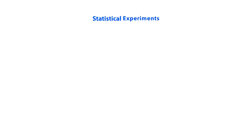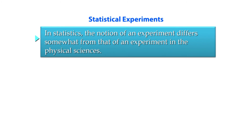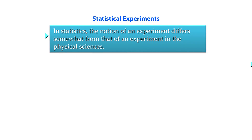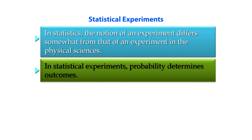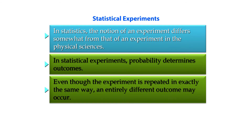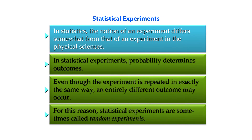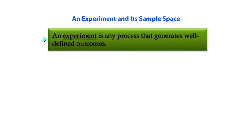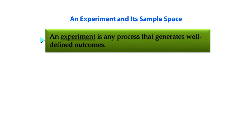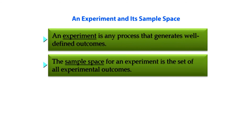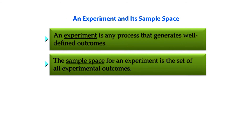In statistics, the notion of an experiment differs somewhat from that of an experiment in the physical sciences. In statistical experiments, probability determines outcomes. Even though the experiment is repeated in exactly the same way, an entirely different outcome may occur — for this reason, statistical experiments are sometimes called random experiments. An experiment is any process that generates well-defined outcomes. The sample space for an experiment is the set of all experiment outcomes, and an experiment outcome is also called a sample point.